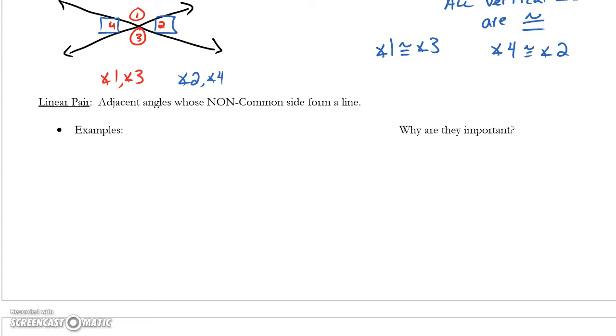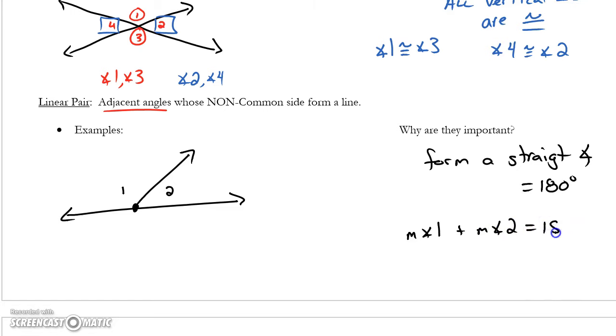The last type here are linear pair. A linear pair are adjacent angles whose non-common side form a line. So they are sharing a vertex. They share a side. The other two sides form a line. Why are they important? Since they form a line, they form a straight angle. And straight angles equal 180 degrees. So, if that's angle 1 and that's angle 2, we would say that the measure of angle 1 plus the measure of angle 2 equals 180 degrees.